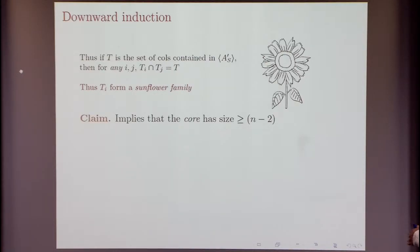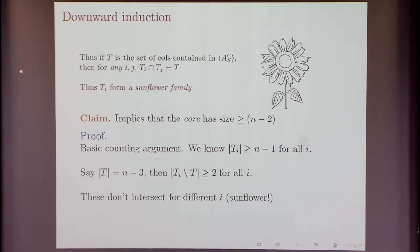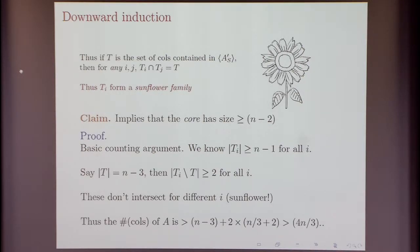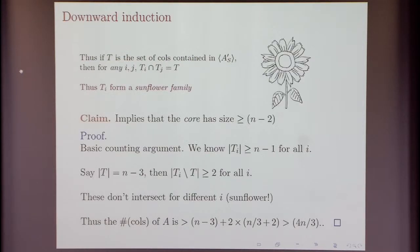Using the fact that each set T_i has size at least n-1, the goal is to show by a counting argument that the core must have size at least n-2. This turns out to be quite simple to prove — a simple counting argument shows you must have enough columns in the core.